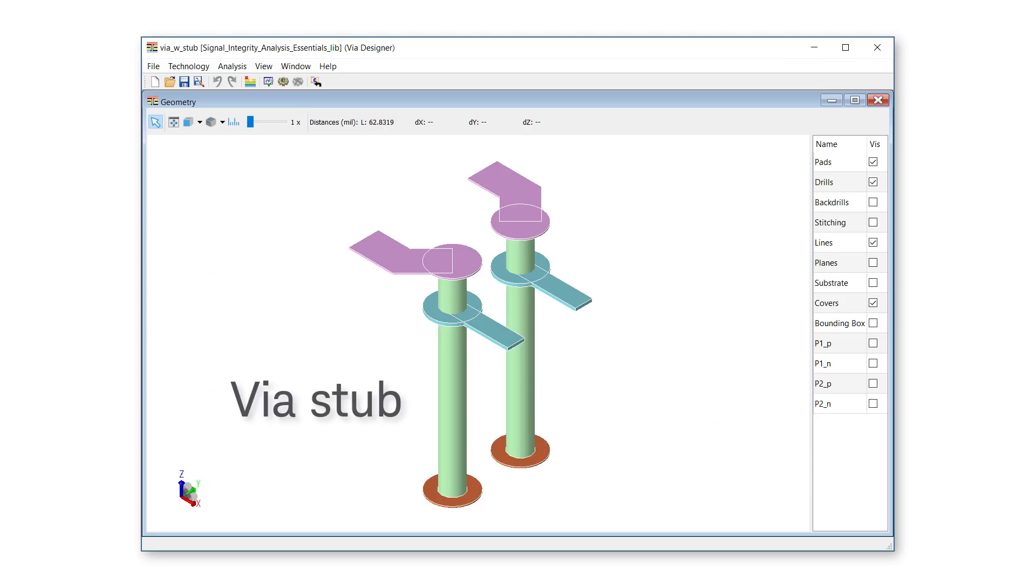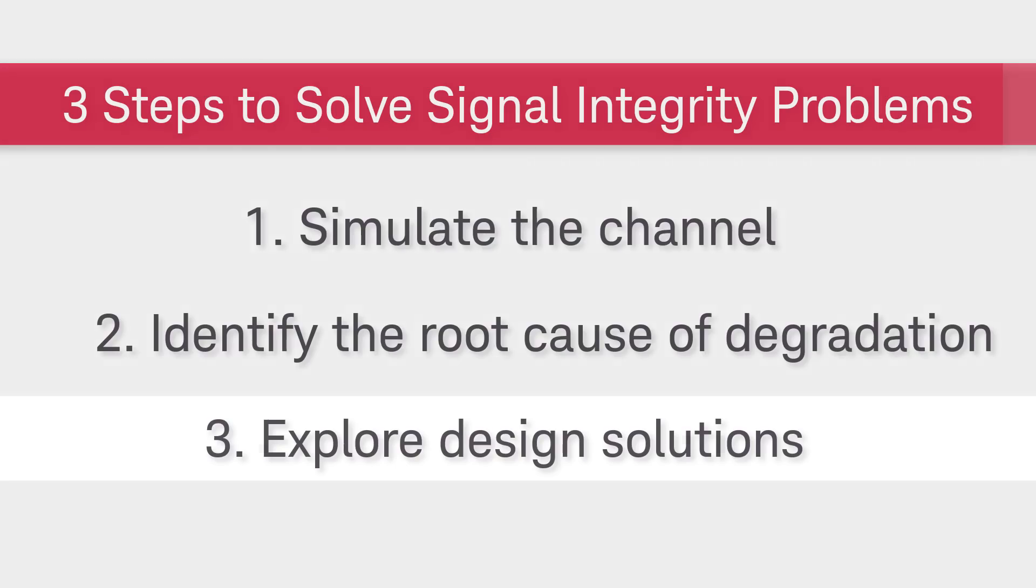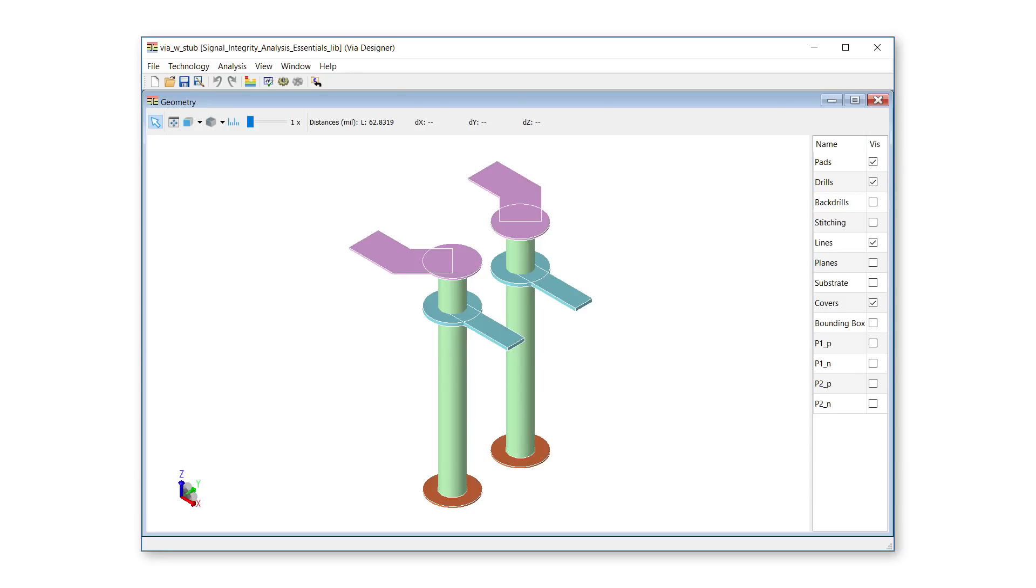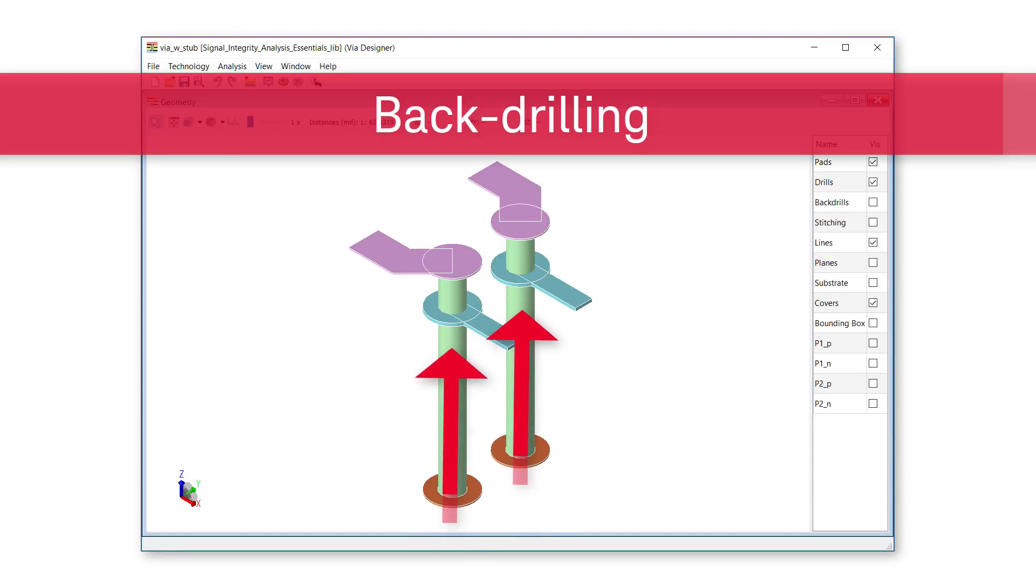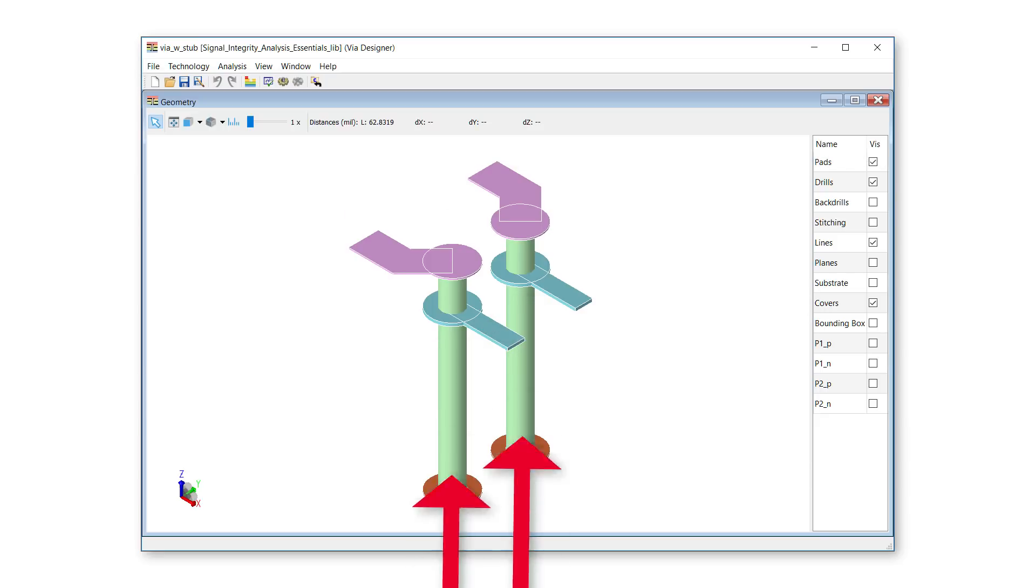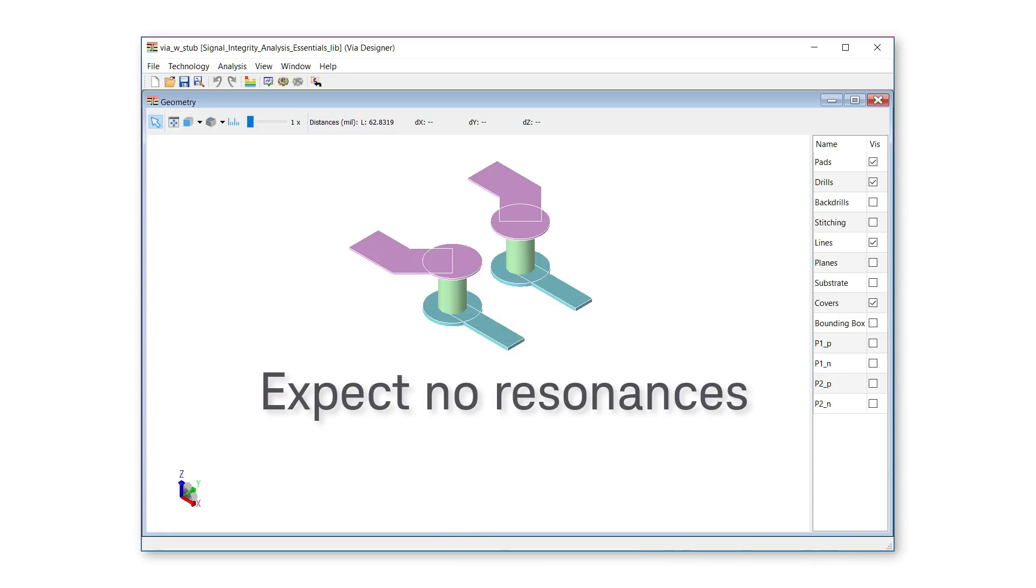Having found the root cause of degradation to be the via stubs, we have arrived at the final step, explore design solutions. Back drilling is often done during the manufacturing process to remove the extra stub length and eliminate stub resonance. Back drilling can also be done in designs. After removing the stubs, we expect the resonance to be gone and the eye to open.